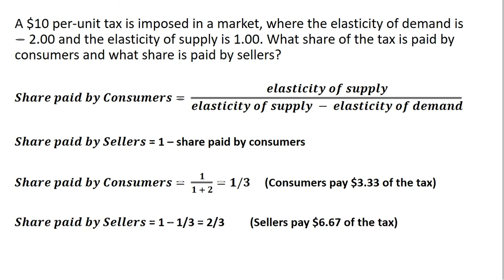As for the sellers, the share paid by the sellers is 1 minus the share paid by the consumers. In this case, the share paid by the sellers is 2 thirds. 2 thirds of $10 is $6.67.